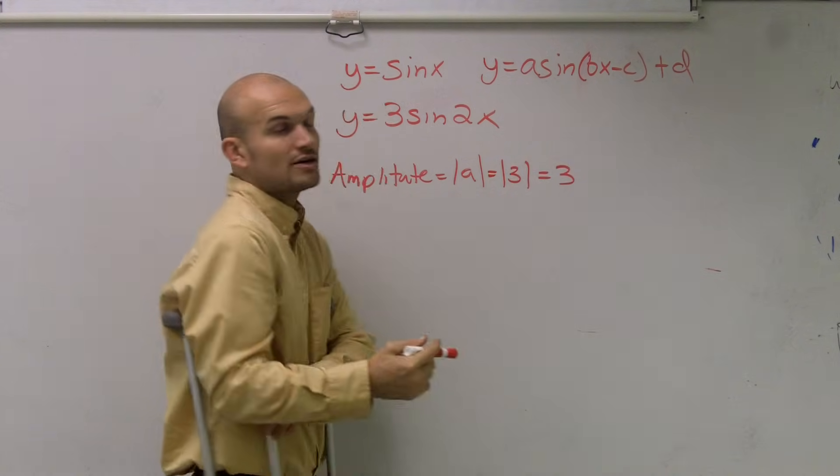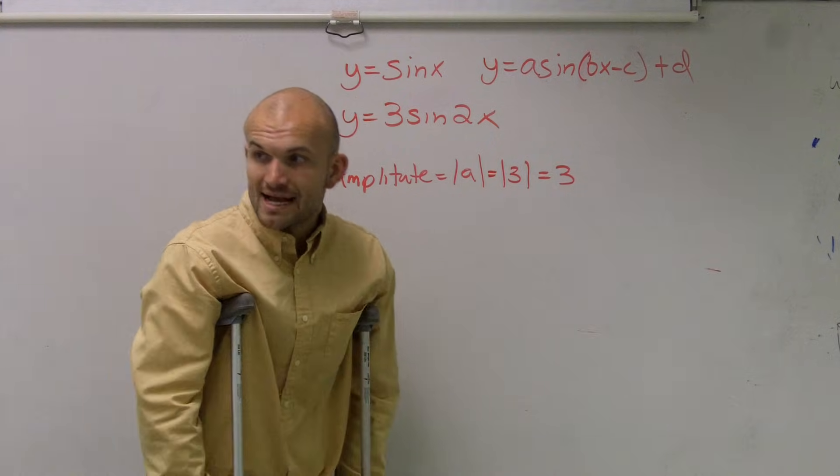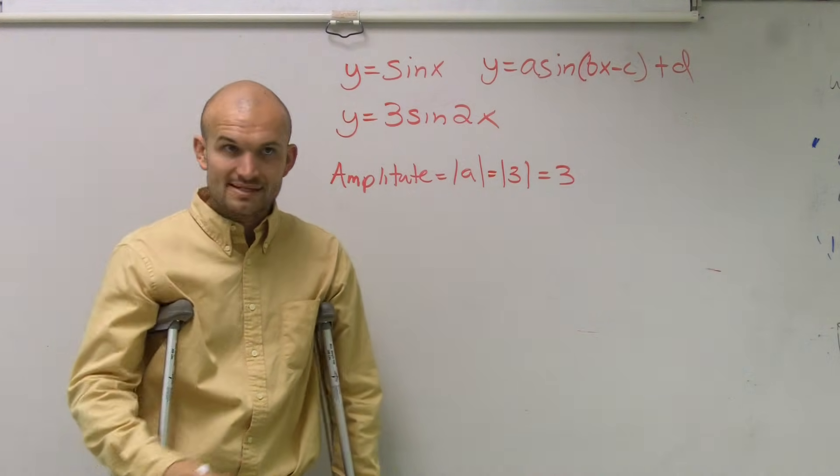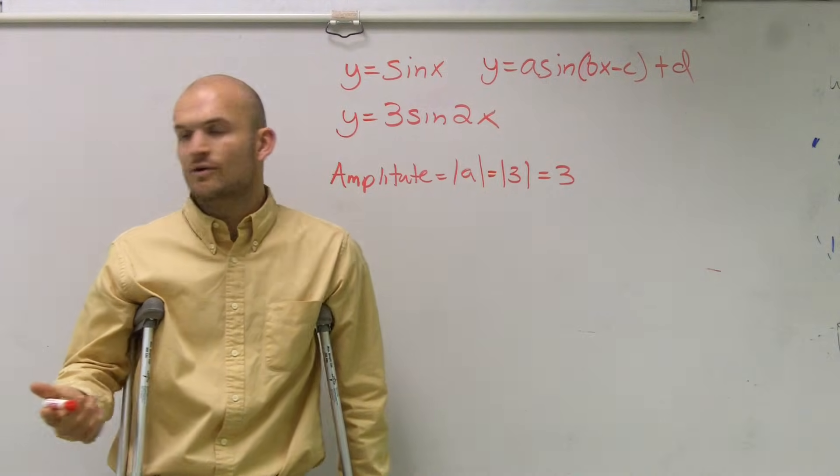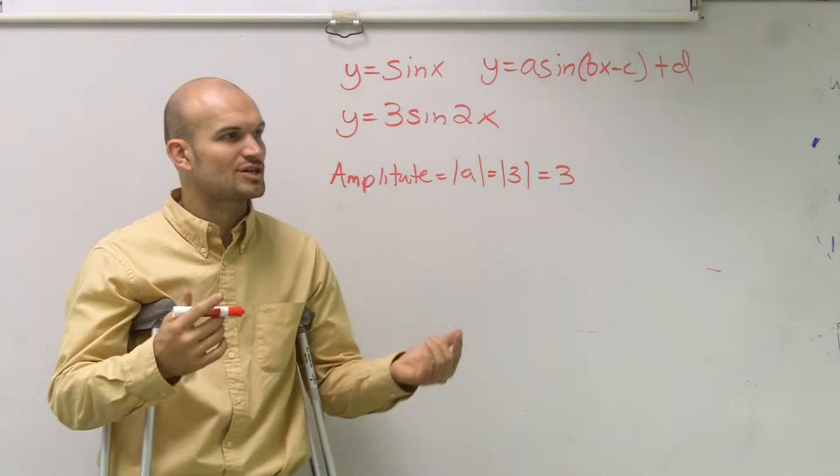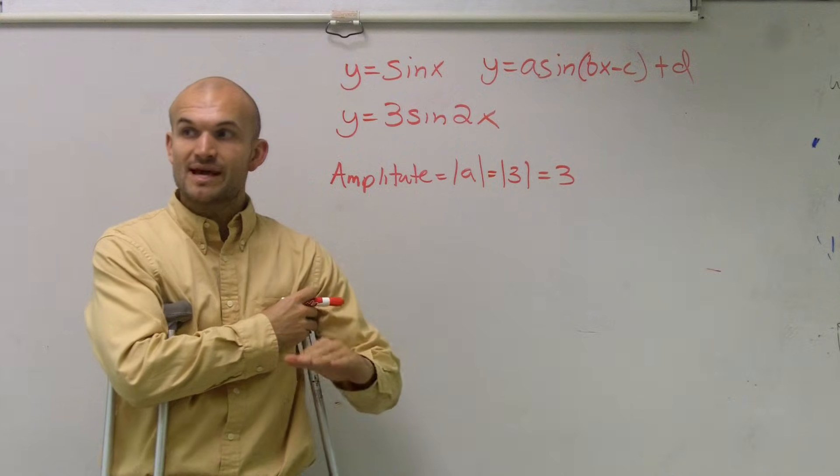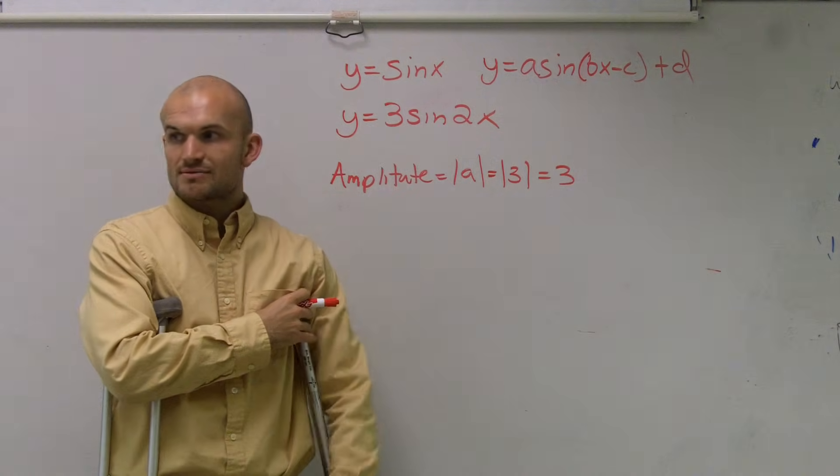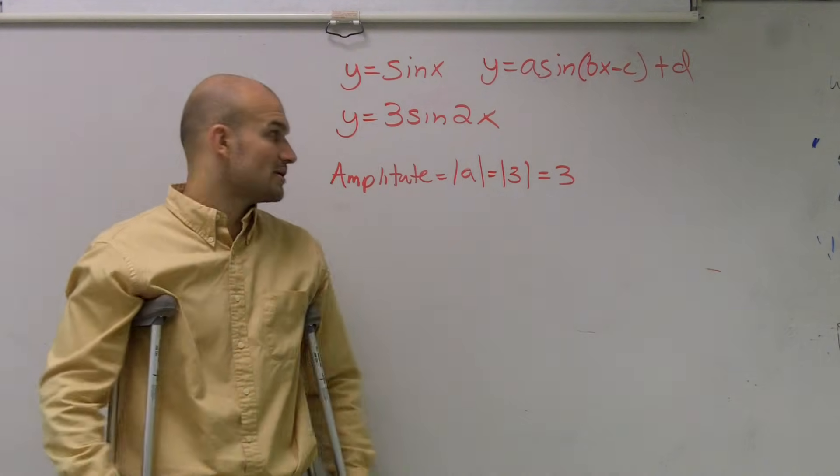So that means the height of my graph from the x-axis up and down is 3. And I think if you look at that graph, it shows it to you, right? So you can just double check that. Is that exactly what it shows? Yeah. Okay, the height from the x-axis up to my maximum and down to my minimum is 3 units.